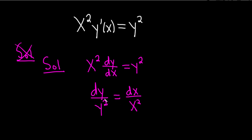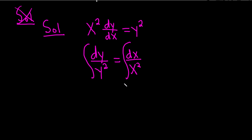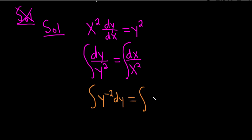We can go ahead and integrate both sides, so I'm going to put the integral symbol. However, we can't really integrate this yet in the way it's written — it will be beneficial to rewrite this. We can bring these variables upstairs, and when we do that it makes the exponents negative. So this will become y to the negative 2 dy, and on the right-hand side we're going to get x to the negative 2 dx.